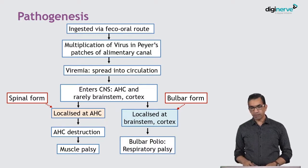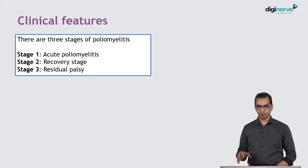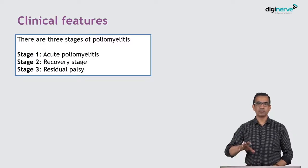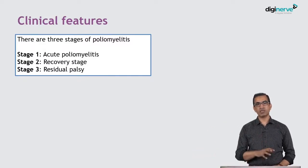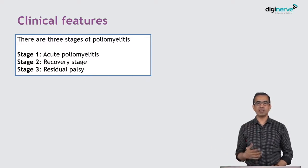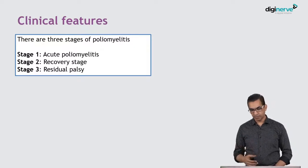If it is localized at the brain stem, patients can get bulbar polio. Bulbar polio means the cranial nucleus is affected, and patients can get respiratory paralysis. There are three stages of poliomyelitis: acute poliomyelitis, the recovery stage, and the residual stage, where patients are left with some deformities, paralysis, contractures, and final functional limitation.